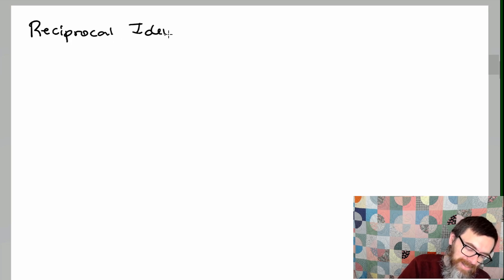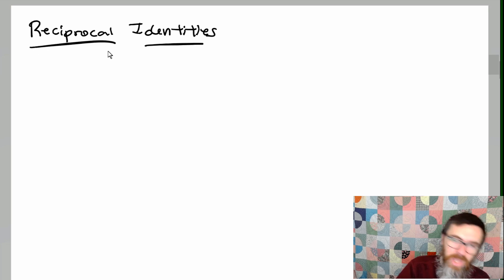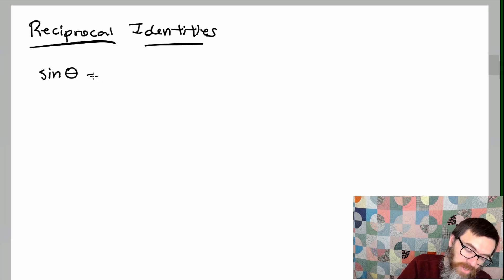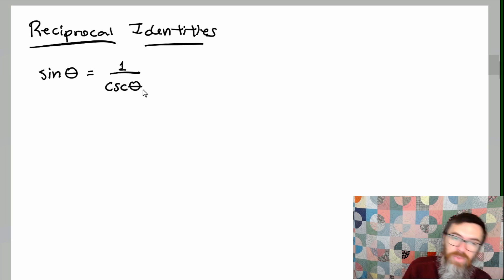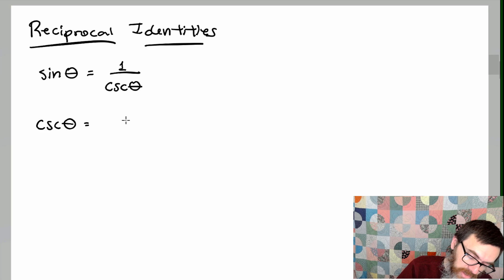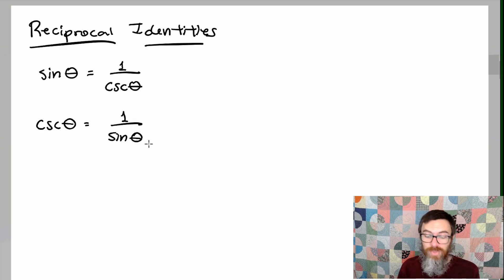In this section we're going to connect back to something I've talked about a lot in the last section, and that's reciprocal identities. So here are the reciprocal identities. In the last videos we were talking about how sine is related to cosecant and how it's one over cosecant, which would mean that cosecant is also the reciprocal of sine.